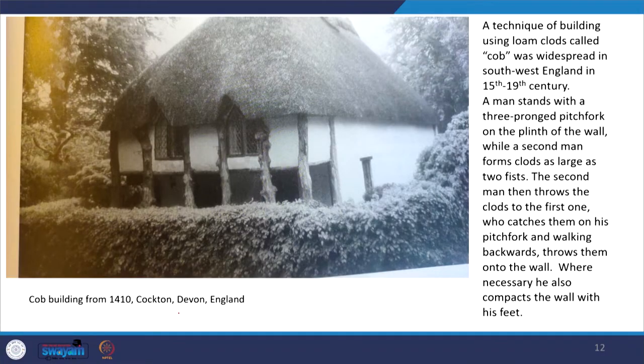There is another model to discuss: Cob buildings. These are frequently observed in Devonshire, England, where they became widespread from the 15th to 19th century. Raw tree trunks formulate panels with spaces for windows and infill material. In the construction process, one man stands with a three-pronged pitchfork on the plinth of the wall, while a second man forms clods — balls as large as two fists — and throws them to the first man, who catches them with the pitchfork and walking backwards presses them onto the wall, compacting it with his feet wherever needed.